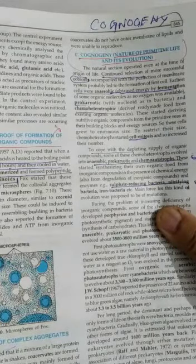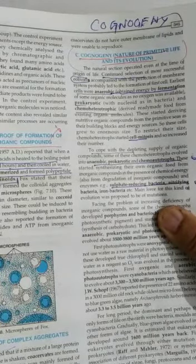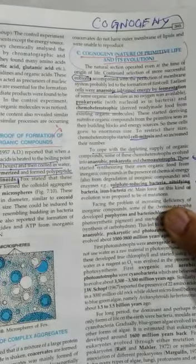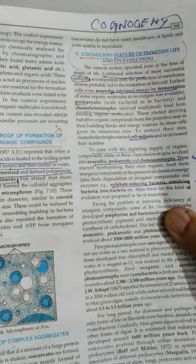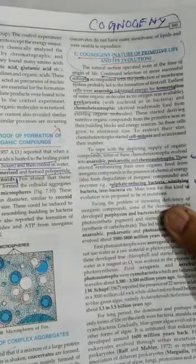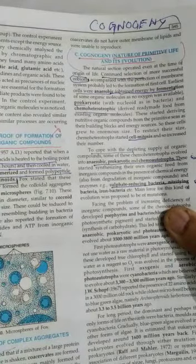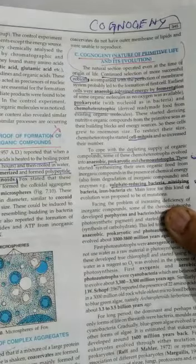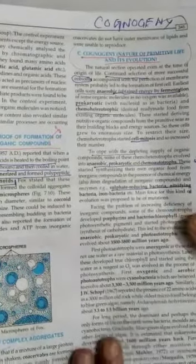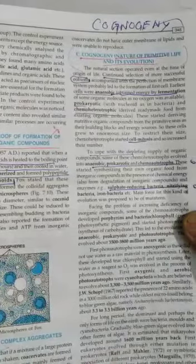I told you microspheres, eobions, coacervates - all have the same meaning in primitive organisms or primitive molecules.